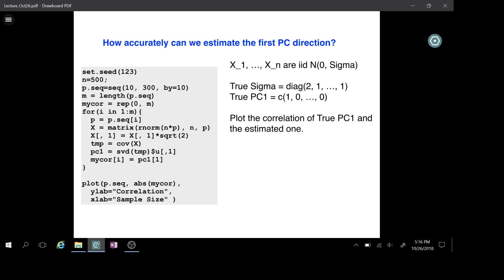How accurately can we estimate the first principal component direction? Here, I generate data x1 through xn. They are iid from normal zero sigma square. Sigma is a p by p matrix. So the true sigma would be a diagonal matrix. The first element is 2 and the remaining are all 1. So we know the principal component, if computed based on the true sigma, will be just the first dimension, 1, 0, 0. On the left, I include the script we used for this simulation. We generate 500 observations and I try different dimension p, from 10, 20, 30, all the way to 300.